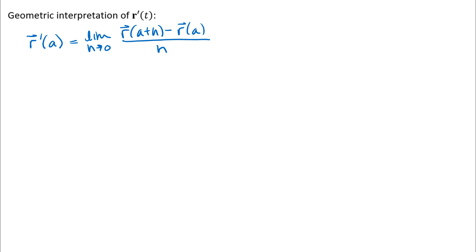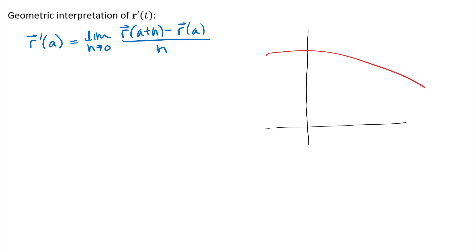What we want to think about here is the geometry of what this limit actually means. I'm going to draw a two-dimensional curve — I drew a little xy coordinate system and a curve with an orientation. I want to think about r(a) first: that's a vector when I input t equals a, and the terminal point of that vector is a point along the curve.